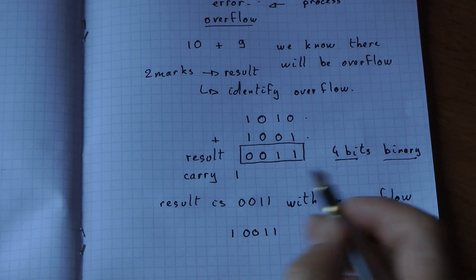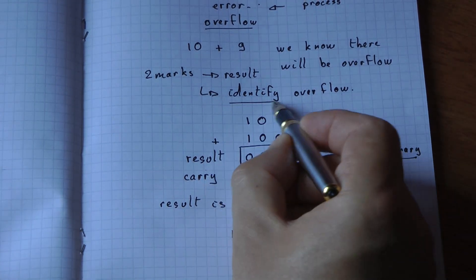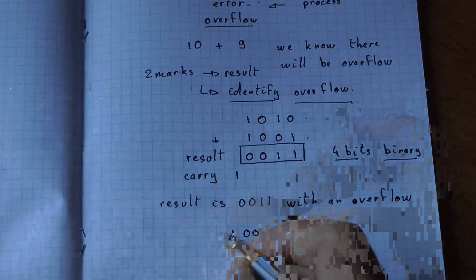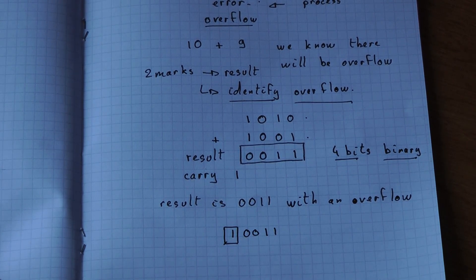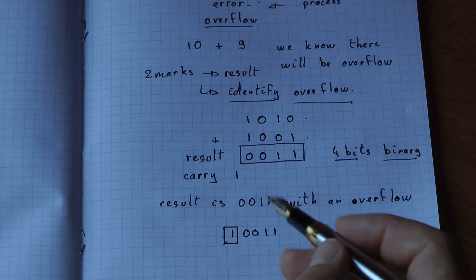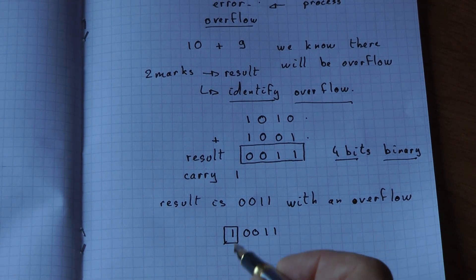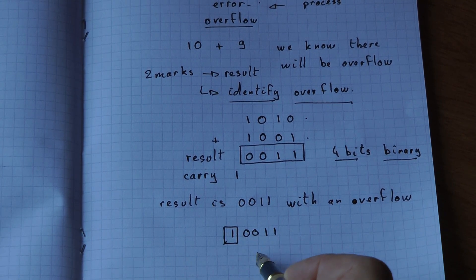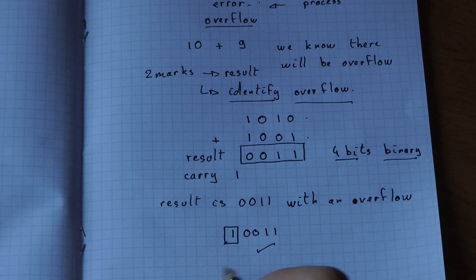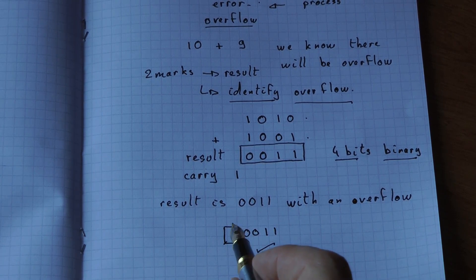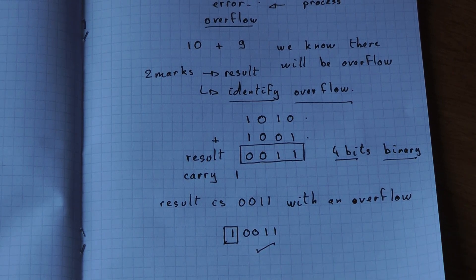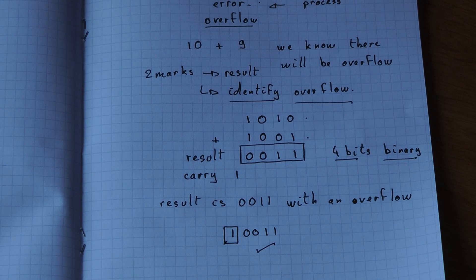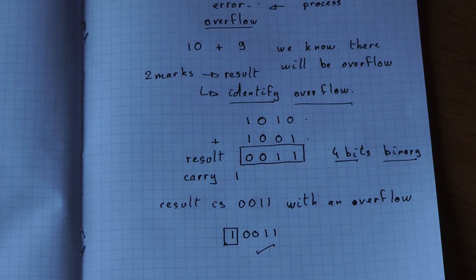But you can identify the overflow by doing this. So the examiner, when reading your answer, will see that you've done the right result with your 4-bit and that you've identified that there is an overflow error happening because you're adding two numbers that are bigger than what you can fit inside your 4-bit binary.